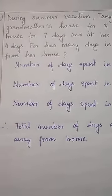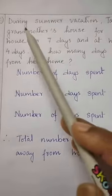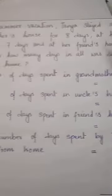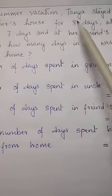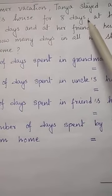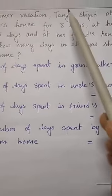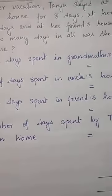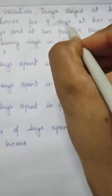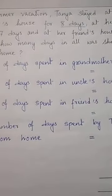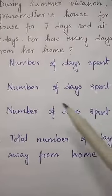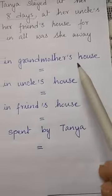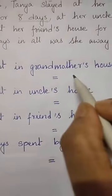Let's read the first part of the question: during summer vacation, Tanya stayed at her grandmother's house for 8 days. Tanya stayed at her grandmother's house for how many days? 8 days. So the statement you will write: number of days spent in grandmother's house is equal to 8 days.